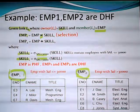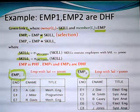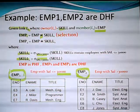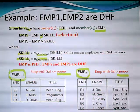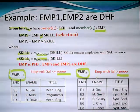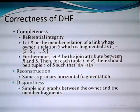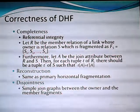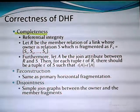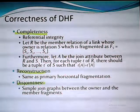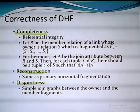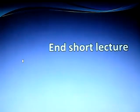EMB1 contains the employees with salary greater than $30,000, and EMB2 contains the employees with salary less than or equal to $30,000. This is the correctness of DHF. You have three properties: completeness, disjointness, and reconstruction — as I mentioned when I presented how to design a distributed database.